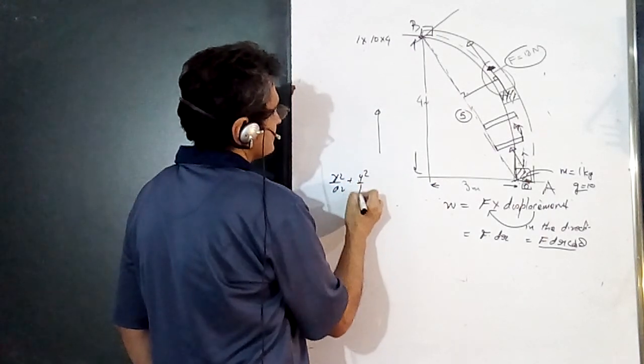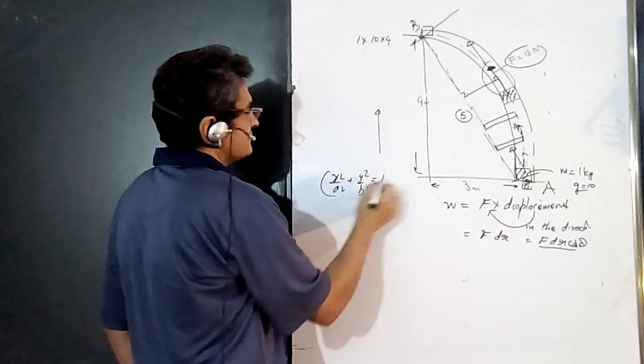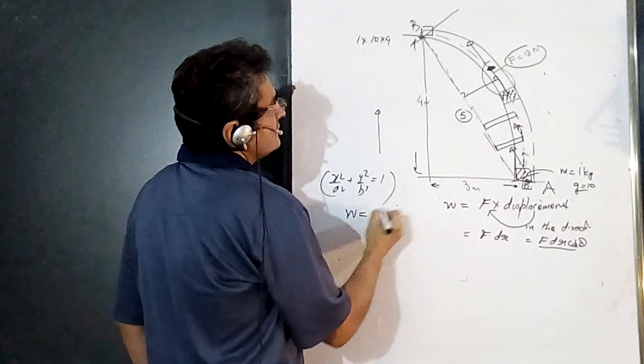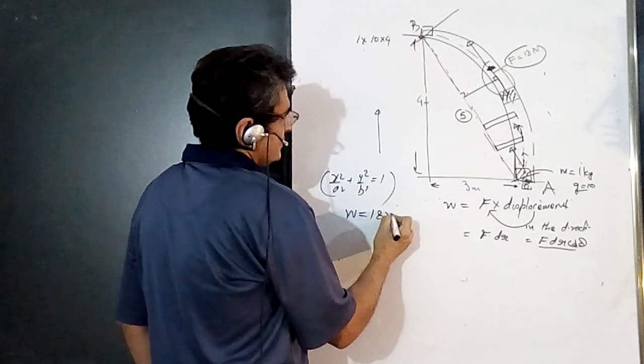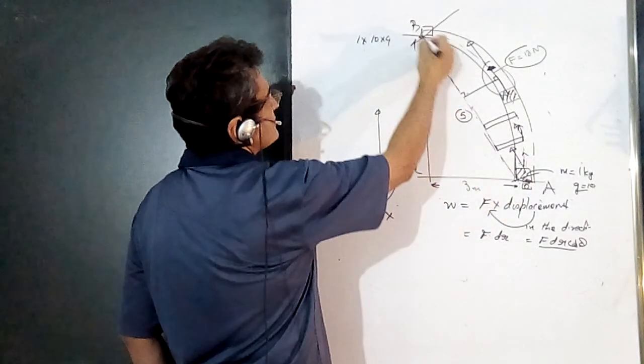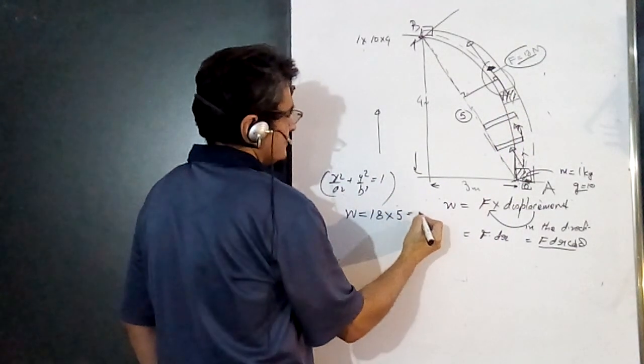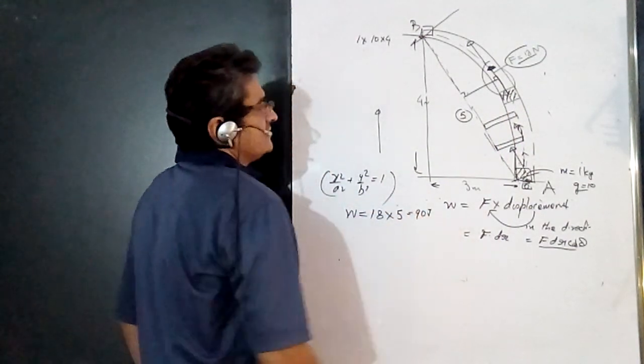Plus y² upon b² equals 1—that will simply waste time. Simple: work done is force, which is 18, into this displacement along the force, which is 5, giving 90 joules.